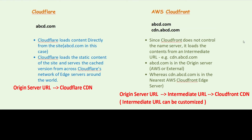Let's take an example of a website — say abcd.com. In the case of Cloudflare, the contents of the website are directly loaded from the origin server. Cloudflare loads the static content of the website, creates a cached version, and spreads or distributes it across Cloudflare's network of edge servers around the world.